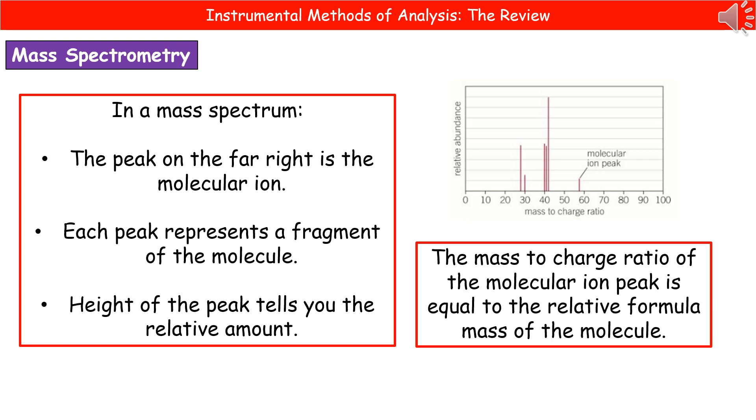Then what we find is, as you go further towards the left, we get different peaks for the different fragments of the molecule. And the height of the peak tells us the relative amount. So we know that that particular chemical, with its relative formula mass of about 58, is going to be broken up into these smaller fragments with those masses of around 30 and 40.